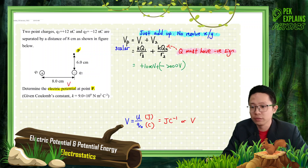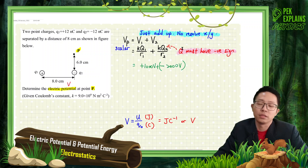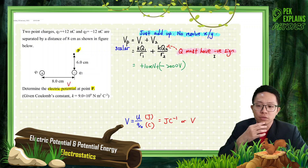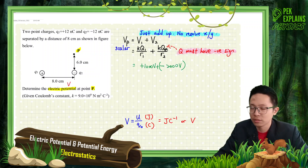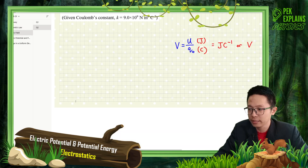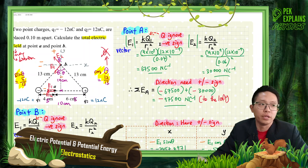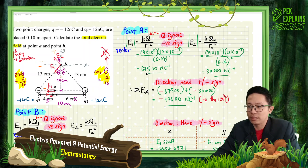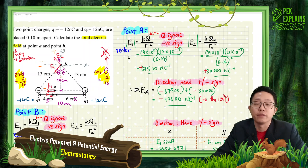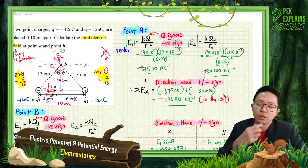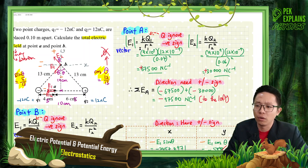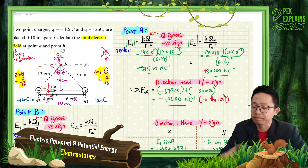For force and electric field — which are vector quantities — you ignore the negative sign of the charge, because you just want the positive magnitude. But for scalar quantities like potential, you must include the negative sign, because the negative sign carries a different meaning.